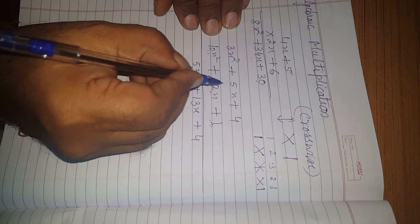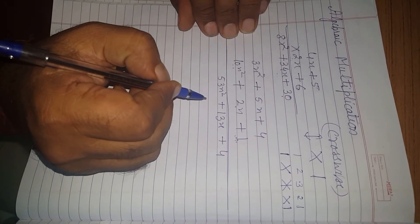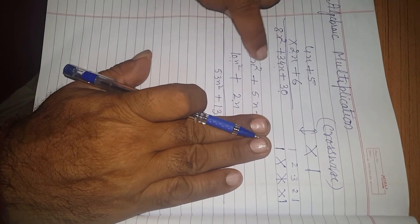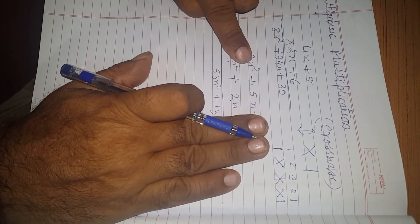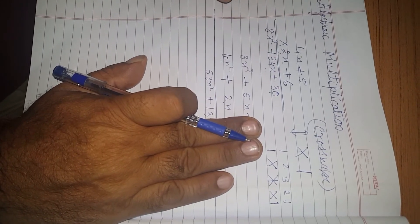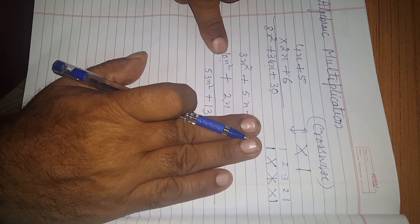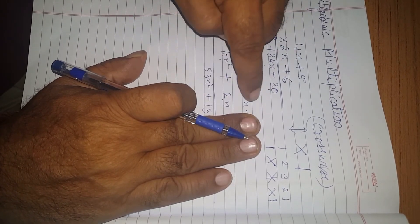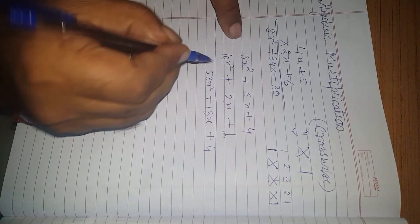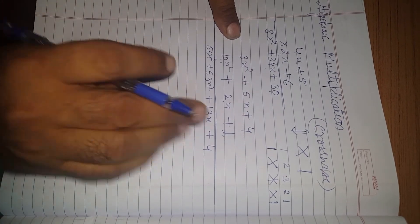Next step is this cross. We will do crosswise multiplication. Now, 3x square into 2x is 6x cube. 5x into 10x square is 50x cube. So, 6x cube plus 50x cube, we will get 56x cube.